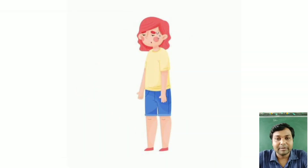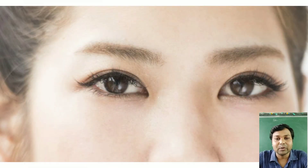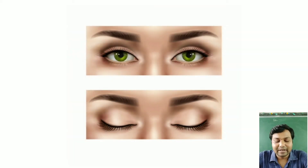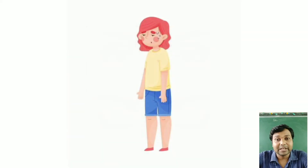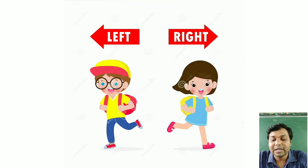Hands down — abhi woh dono hatho ko niche lana hai. Close your eyes — aapko apni aankhein band karni hain. Stand up — abhi jagah par aapko khaday ho jana hai. Turn left — khaday ho jane ke baad aapko left side mein mur jana hai.